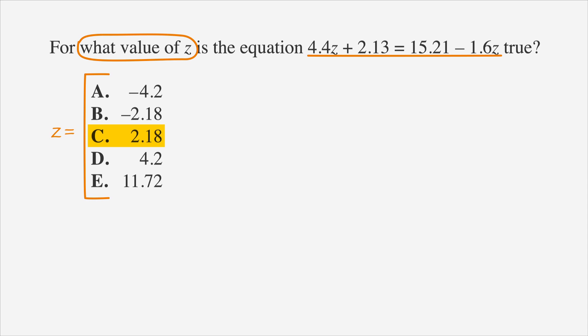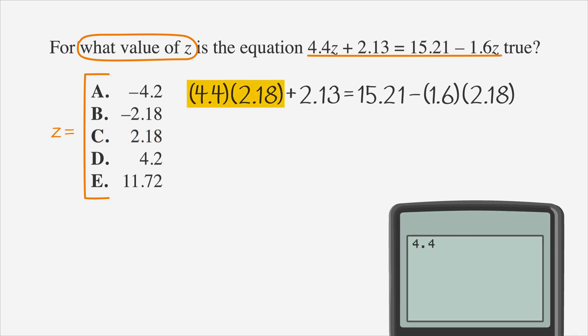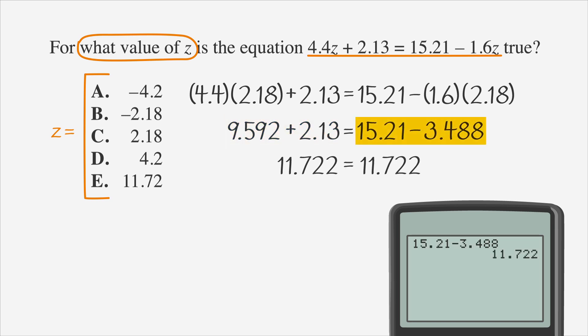We'll replace the z's in the equation with 2.18. If the left side equals the right side, then we'll know we have the right answer. Let's do some work on our calculators. We get 9.592 plus 2.13 equals 15.21 minus 3.488, which gives us 11.722 equals 11.722.